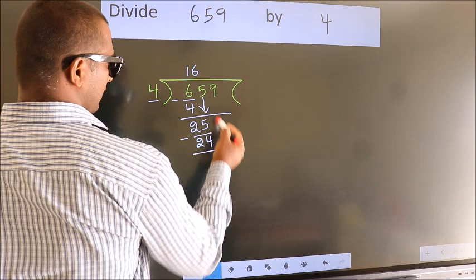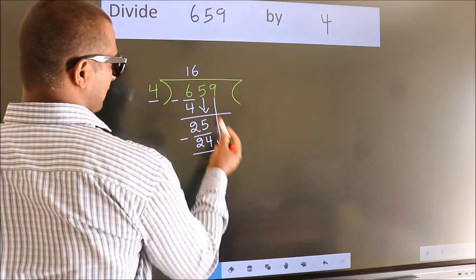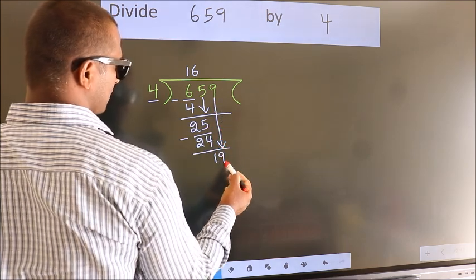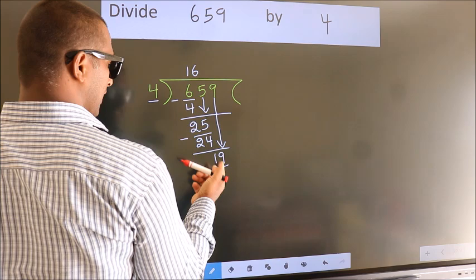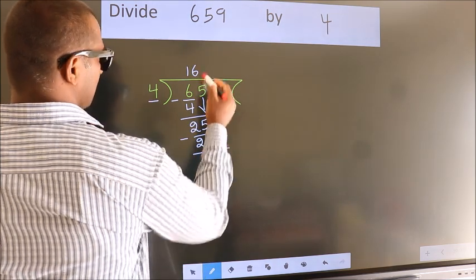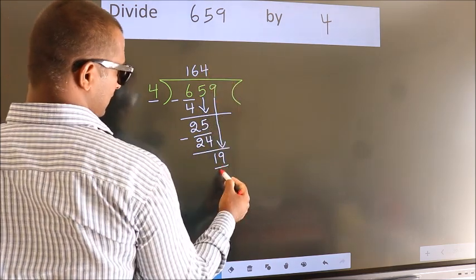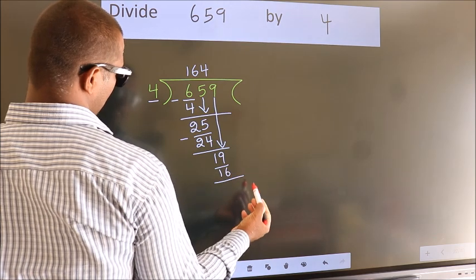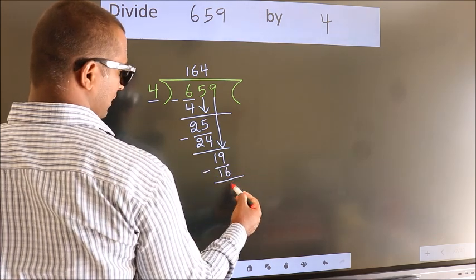After this bring down the beside number. So 9 down. So 19. A number close to 19 in the 4 table is 4, 4, 16. Now we subtract. We get 3.